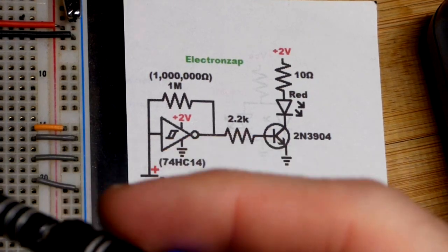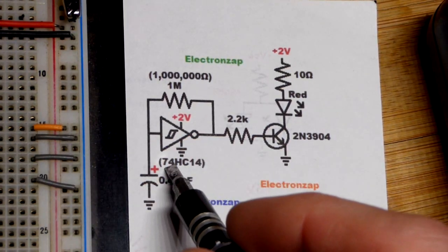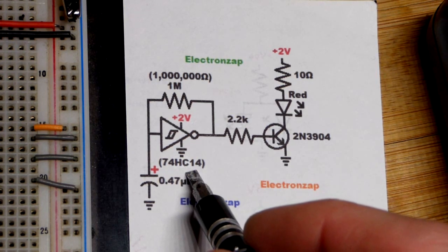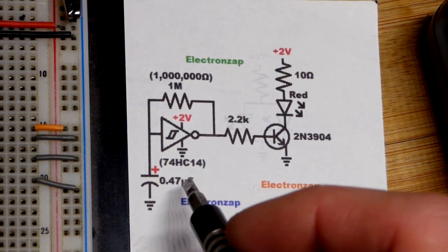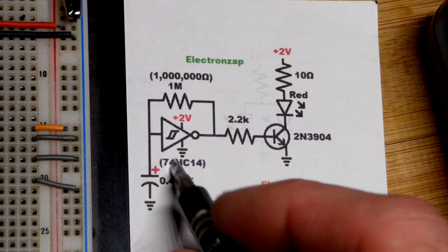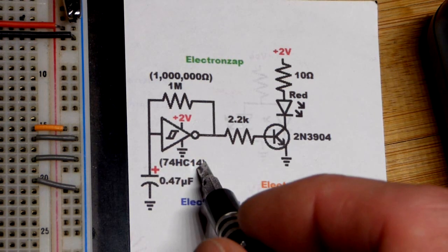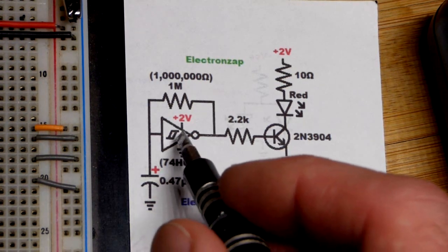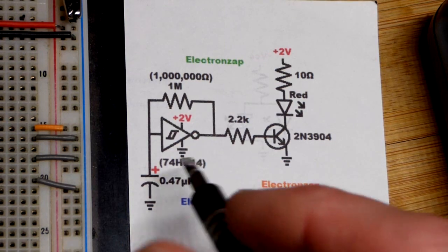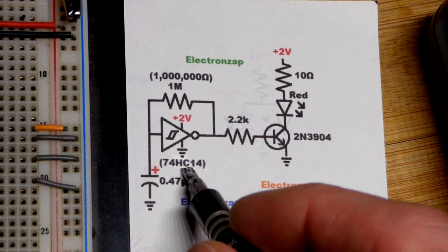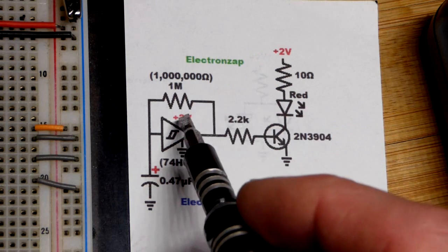Zooming in, you can see that the integrated circuit that we are using is the 74 high speed CMOS 14 right there. And that is important. The 7400 series of integrated circuit 14 means that there are 6 Schmitt trigger NOT gates on it.